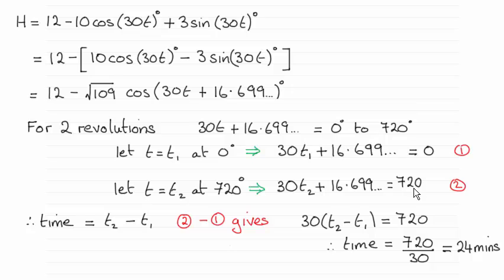Now the time it takes to make two revolutions will be the difference between these two times, t2 minus t1. And I can get that very easily by working out equation 2 minus equation 1.